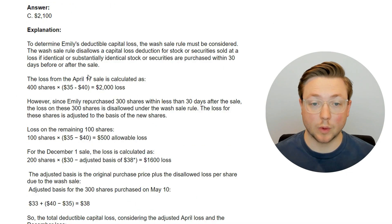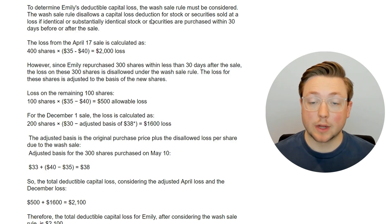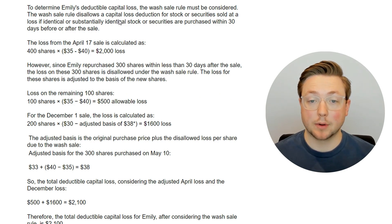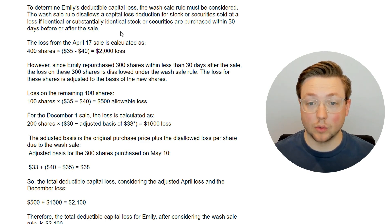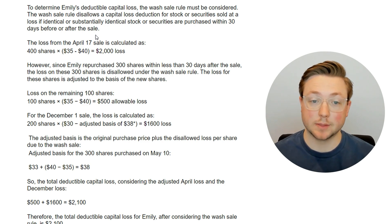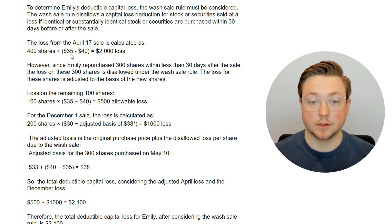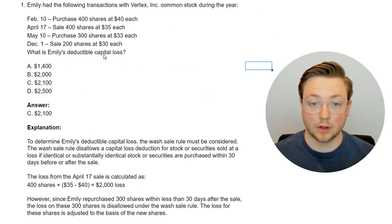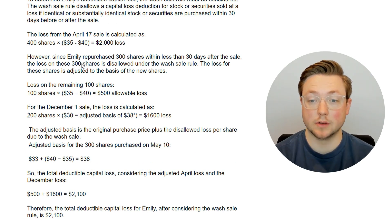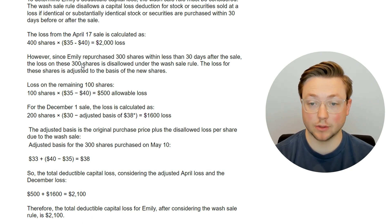The answer is $2,100. To determine Emily's deductible capital loss, the wash sale rule must be considered. The wash sale rule disallows a capital loss deduction for stock or securities sold at a loss if identical or substantially identical stock or securities are purchased within 30 days before or after the sale. The loss from April 17th is calculated as 400 shares times the $5 loss per share, so that's a $2,000 loss. However, since Emily repurchased 300 shares within less than 30 days after the sale, the loss on those 300 shares is disallowed under the wash sale rule.